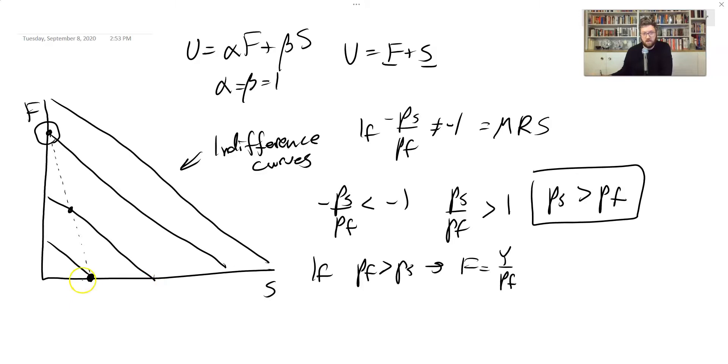On the other hand, what happens if we have the price of shelter fall so much that the demand curve, or the budget curve condition now looks like this? And this is supposed to intersect down in this corner. In this case, we should be down here consuming only shelter. And that's the opposite case. If PF is...